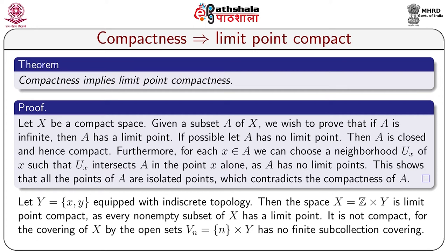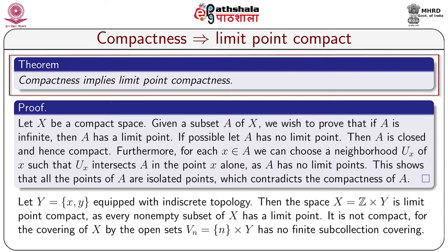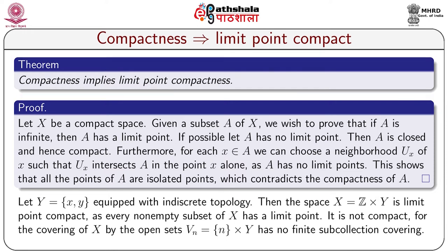Our first target is to prove that in an arbitrary topological space, compactness implies limit point compactness. One thing to remind students: all topological spaces considered in these lectures are T1 unless otherwise stated. To prove that compactness implies limit point compactness, let us take a compact topological space X.